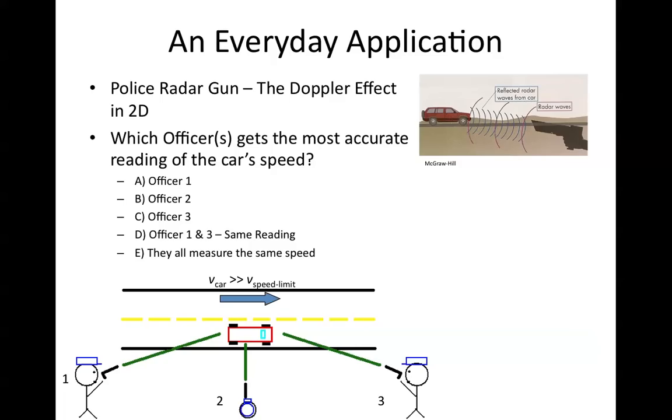This example here is one that more of you may be familiar with, which is a police radar measuring in speed traps. And you'll notice that this is always done from a position just by the side of the road. If you look at Officer 1 and Officer 3, they're standing just off the side of the road and pointing their radar guns at the traffic. Officer 2 is being rather foolish.